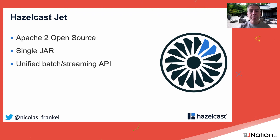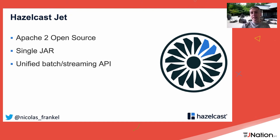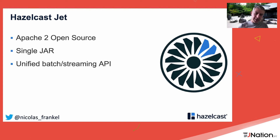Hazelcast Jet has two usage modes. Embedded mode: you add it as a jar dependency and you have one node per application instance — easy to start but not independently scalable. You can just add it to your Maven pom or Gradle build and start hacking right away on your machine.